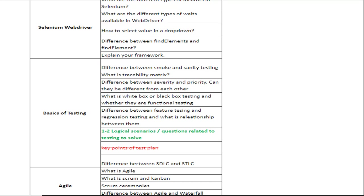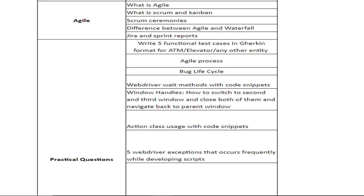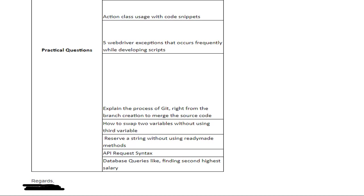Under Agile: what is Agile; what is Scrum and Kanban; Scrum ceremonies; difference between Agile and Waterfall; Jira and sprint reports. Under practical questions: write five functional test cases in Gherkin format for ATM or elevator; bug lifecycle; WebDriver wait methods and action class usage with code snippets; five WebDriver exceptions; explain the git process; how to swap variables; reversing a string; API request syntax; database queries.